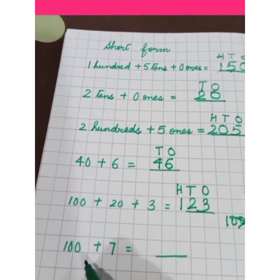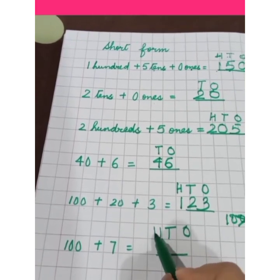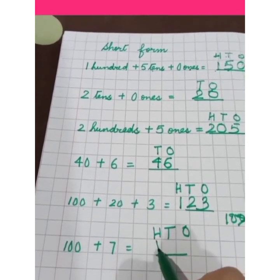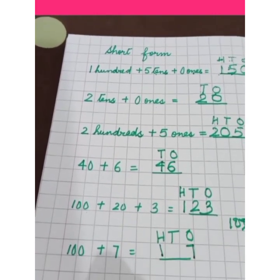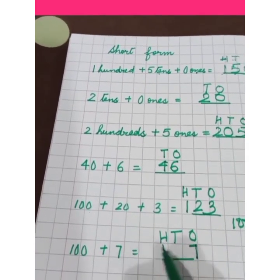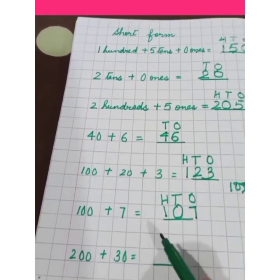100 plus 7, again 100, so there should be 3 places, O, T, H. 1 in the place of 100, 7 ones are 7, 7 in the place of ones. There is no tens given here, 0 in the place of tens, it is 107.